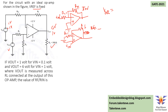Since this op-amp has both configurations, the total output will be the sum of the output from the inverting configuration and the output from the non-inverting configuration — that is, Vout = Vout1 + Vout2. For the non-inverting configuration analysis, the inverting side input is grounded, and RF and RIN are also grounded.